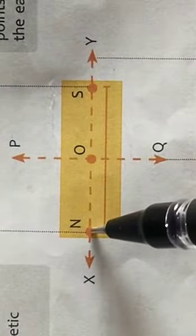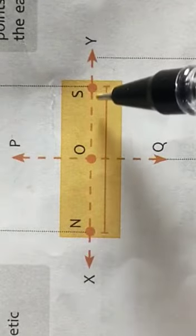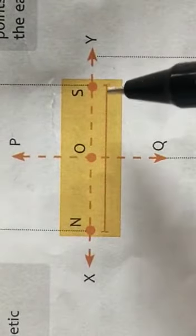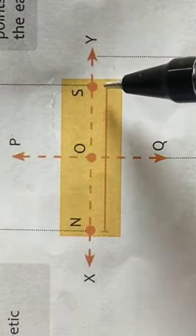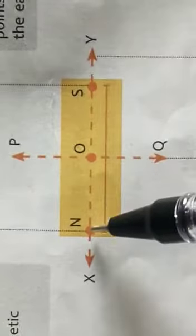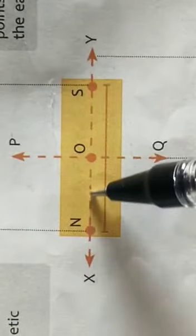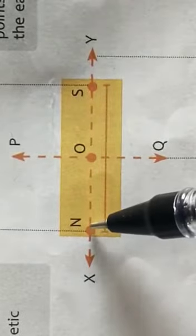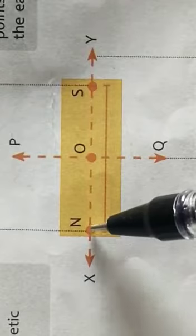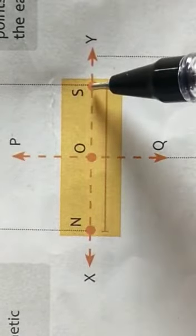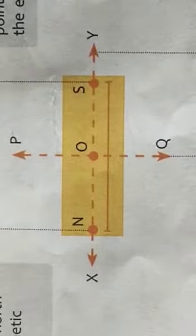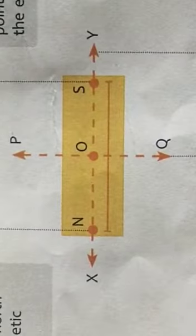The distance between the north pole and the south pole of the magnet is called the effective length of the magnet.